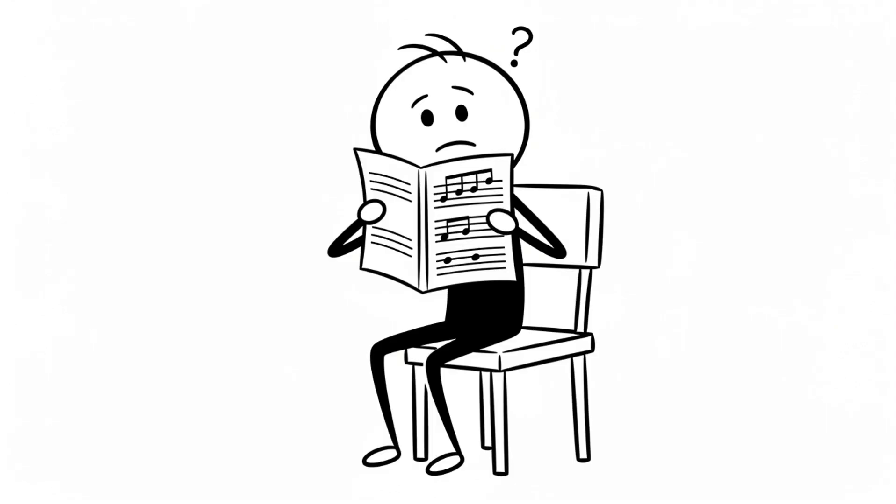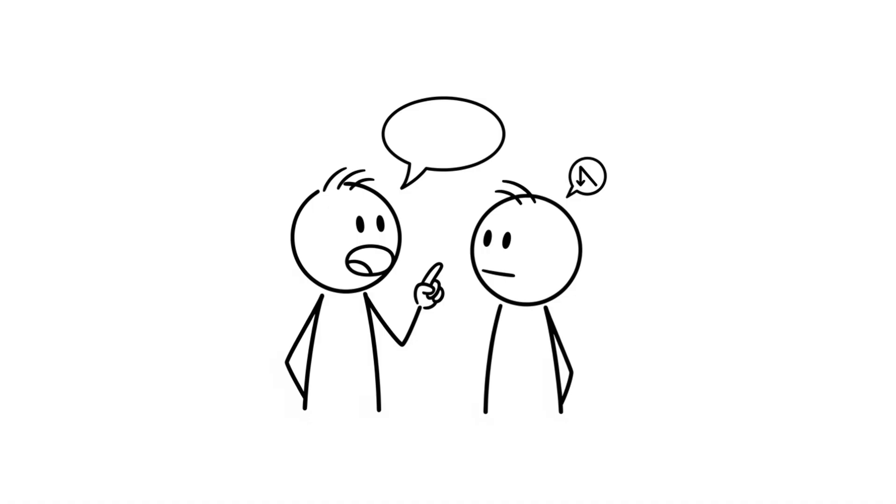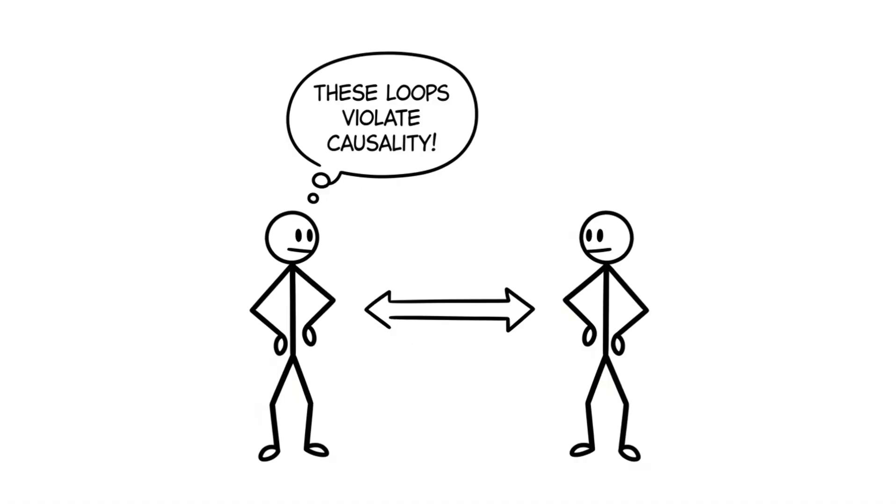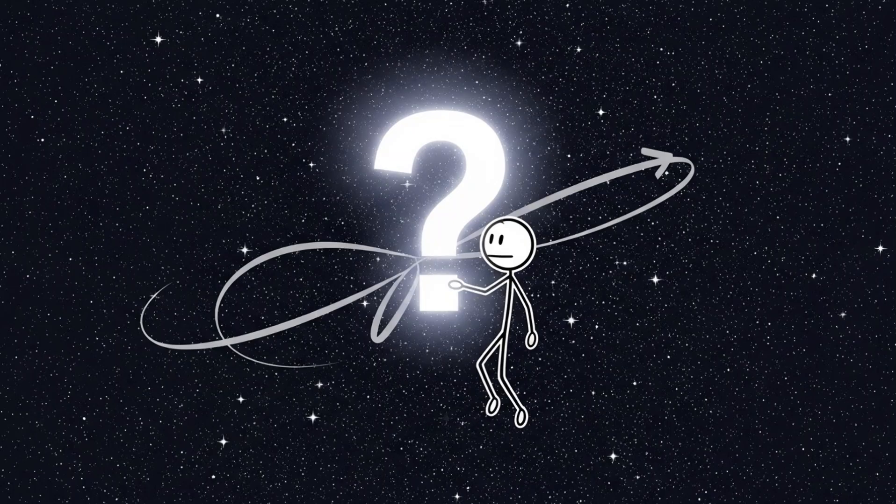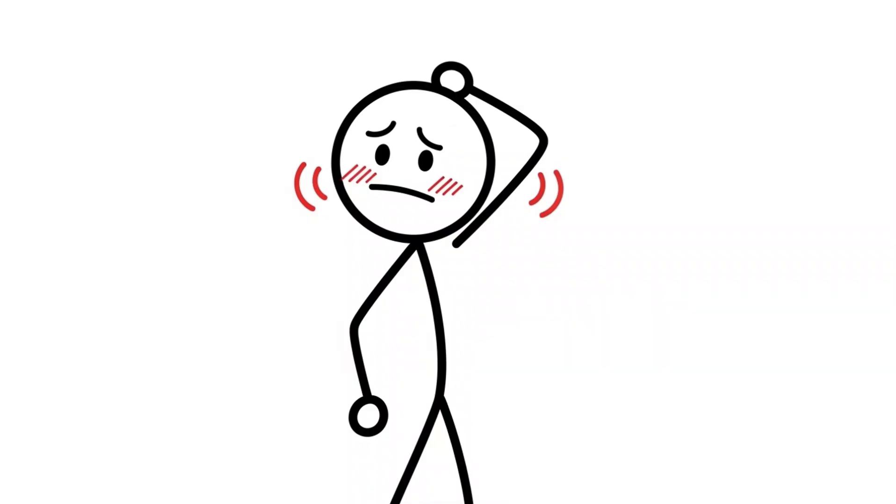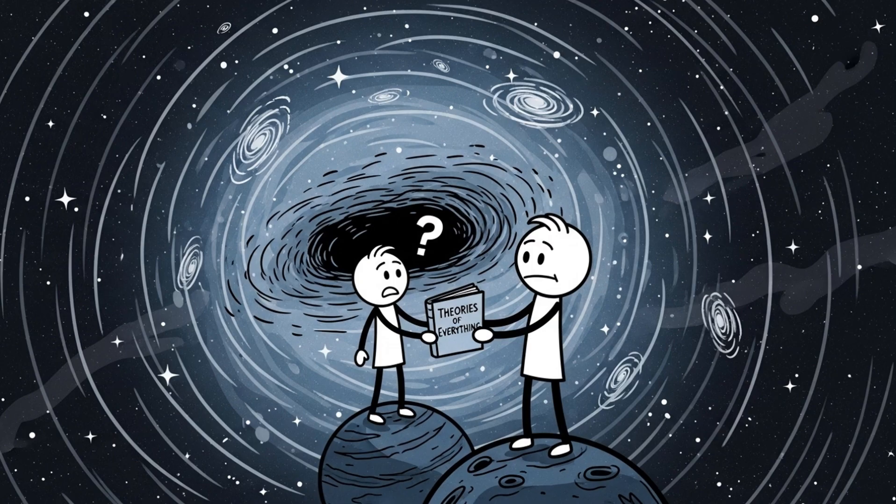The paradox challenges our entire concept of cause and effect. Normally, we think A causes B. But in a bootstrap loop, there's no A, only B repeating itself endlessly. Some physicists think these loops might be impossible because they violate the principle of causality. Others say they could exist but would create bizarre universes where reality is self-contained and originless. The Bootstrap Paradox isn't just about time travel. It forces us to ask, does everything really need a beginning? Or could the universe itself be one giant bootstrap paradox, existing without a clear cause?